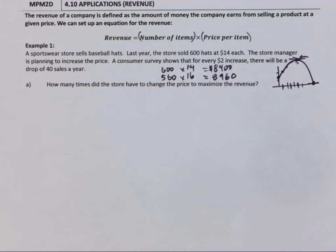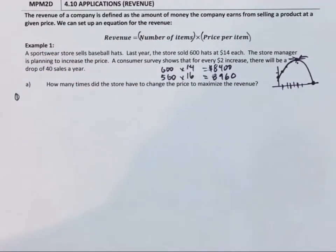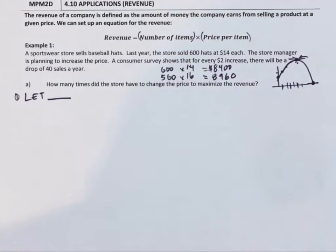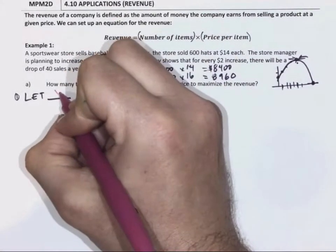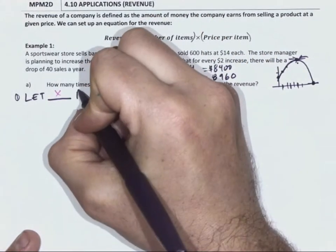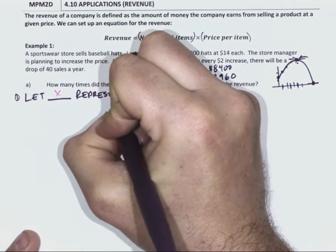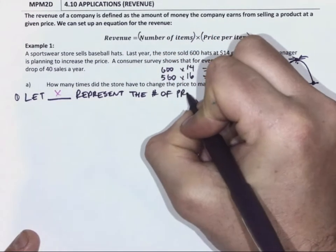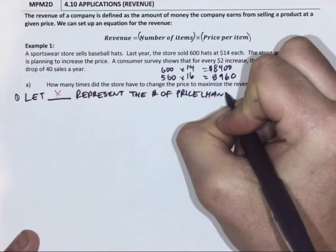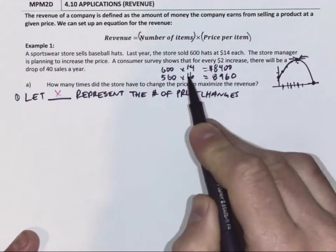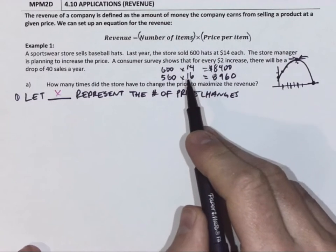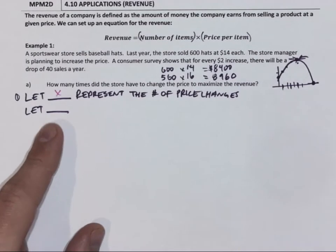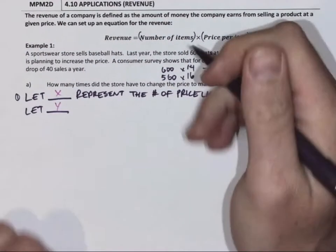So here we're going to set it up a bit different. Let statements are going to help us set it up. We're going to let X represent the number of price changes, and in this particular situation, that's how many times we should increase it by two dollars. Because we're setting up a quadratic, our next let statement is let Y represent the revenue.